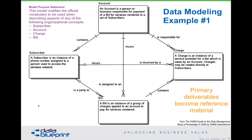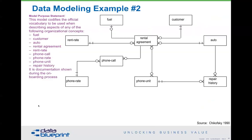Here are more examples of purpose statements from our DAMA DMBOK. It talks specifically about accounts, subscribers, charges, and bills. What this model does is set up a controlled vocabulary so that when other people in the organization are talking about these things, they know exactly what they're talking about. Most organizations have different departments using different definitions of the same thing — those are horrible problems. Here's another example: an operational purpose statement where the model codifies the official vocabulary when describing fuel customers and auto rental agreements.